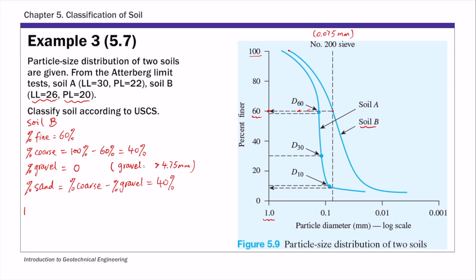Then we're given LL of 26, and PL is 20, so PI is LL minus PL, and that's 6. So that's the information we're given, and for soil B, we don't actually need D10, D30, and D60 values. This is a fine-grained soil, so let's use that classification table 5.2.